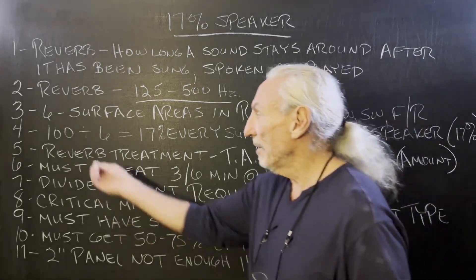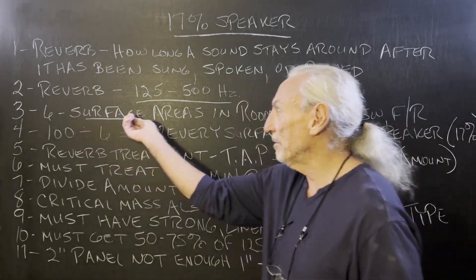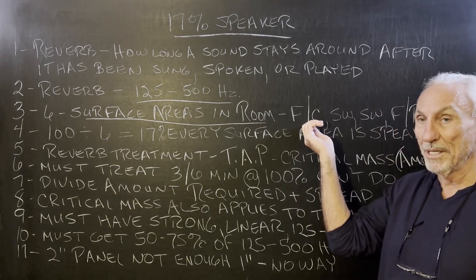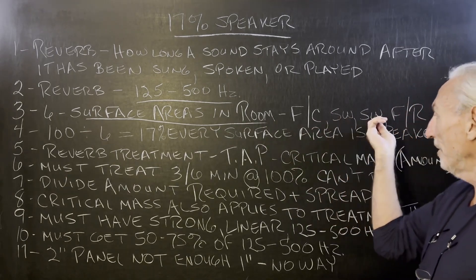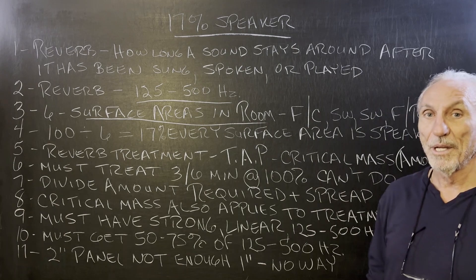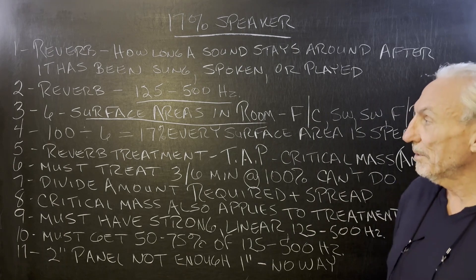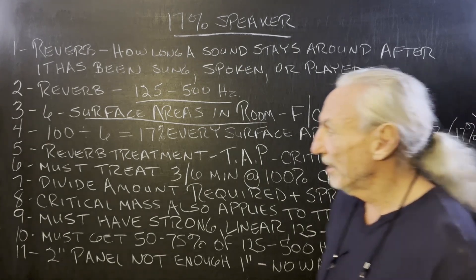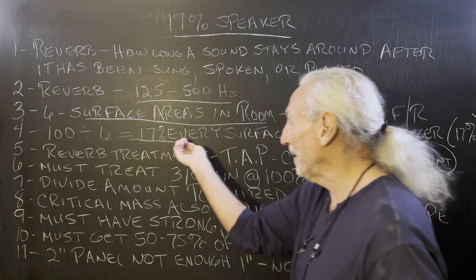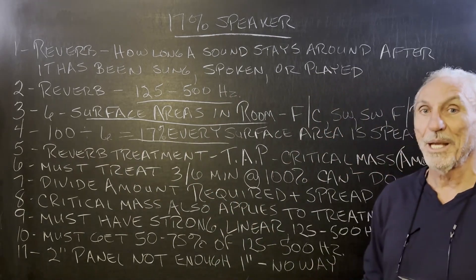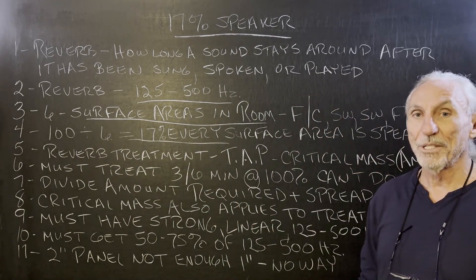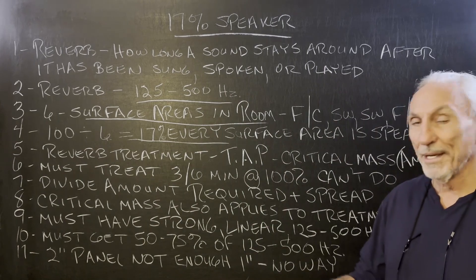We have six surface areas in our room: floor to ceiling, sidewall, sidewall, front to rear — six different surface areas. You take 100%, divide it by six, you get about 17%. Each surface area contributes to reverb.